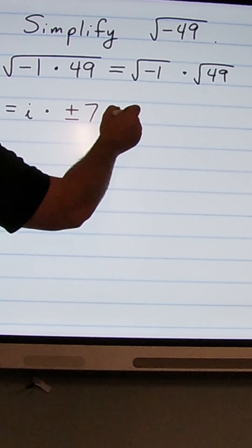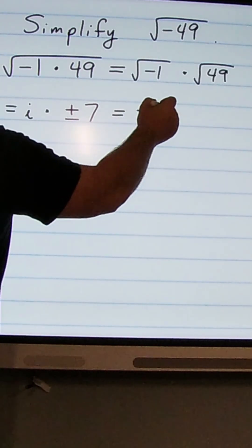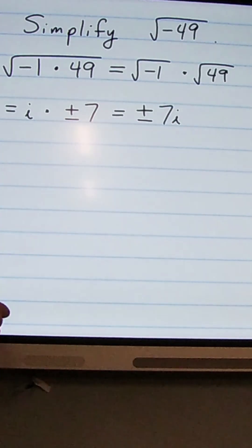So when we write this out, our simplified form is going to be plus or minus 7i. And that indicates that either positive 7 is multiplied by i or negative 7 is multiplied by i. So there's two potential solutions here.